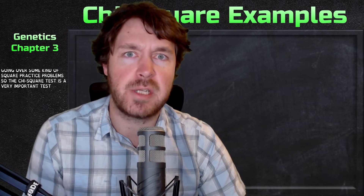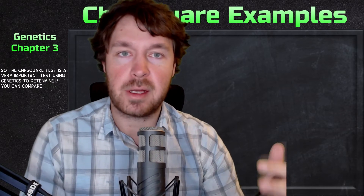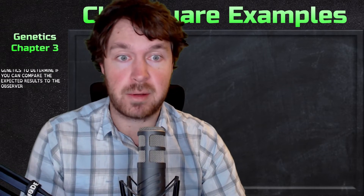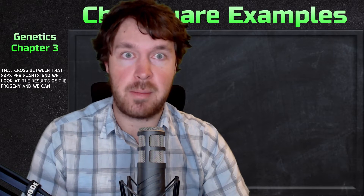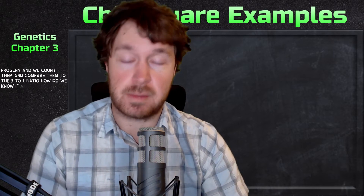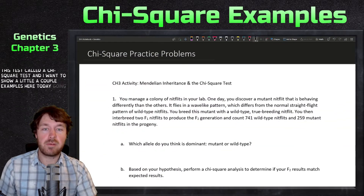Welcome to today's video. We're going to be going over some chi-squared practice problems. The chi-squared test is a very important test used in genetics to determine if you can compare the expected results to the observed results. We've done Punnett squares and said there's a three-to-one ratio, but what if we actually do that cross between pea plants, count the progeny, and compare them? We use the chi-squared test for that.